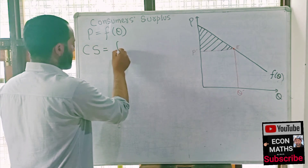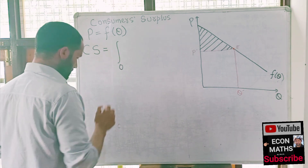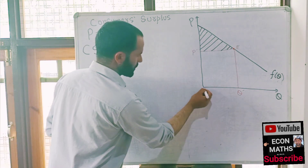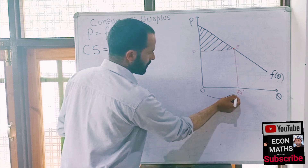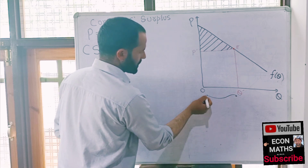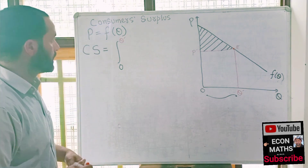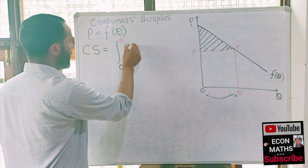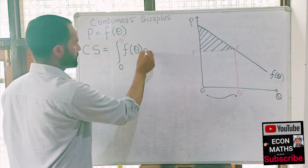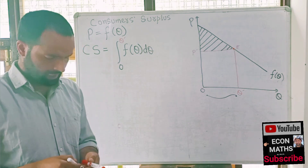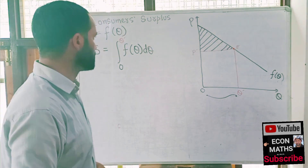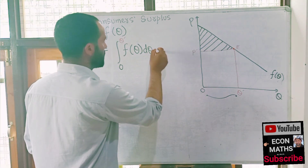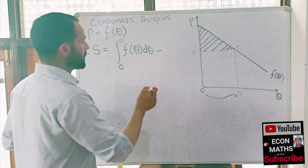Mathematically, this means consumer surplus is equal to the definite integral from zero to the equilibrium quantity Q'. We integrate this demand function F(Q) with respect to quantity, as we have seen in the integration video.